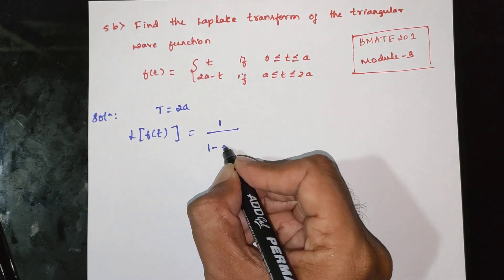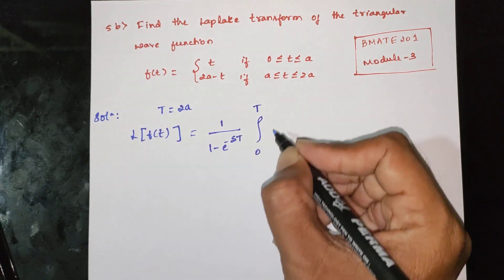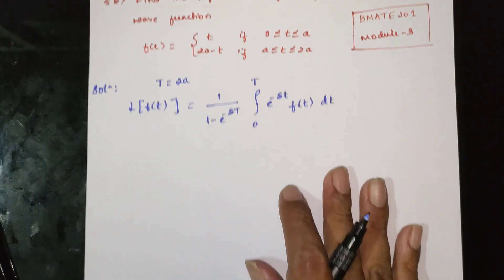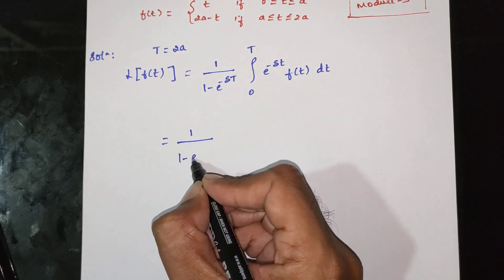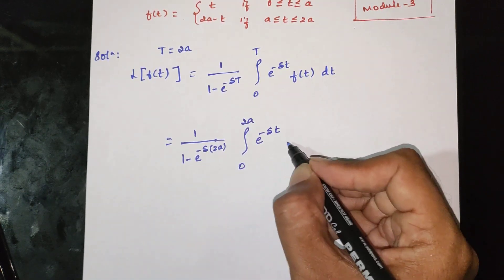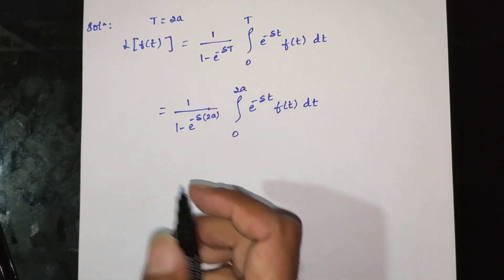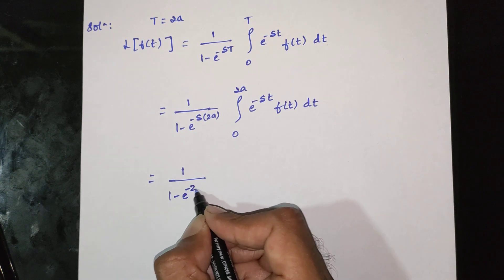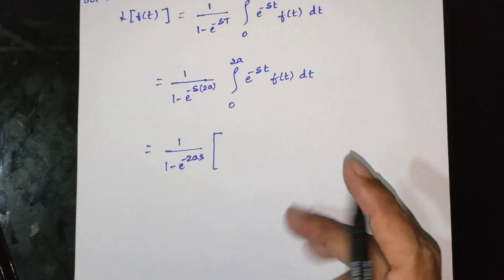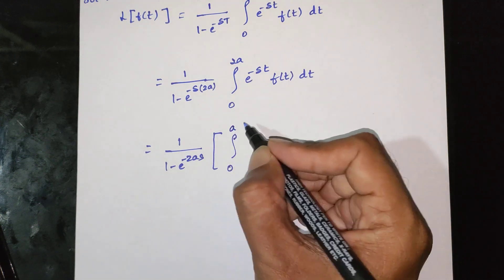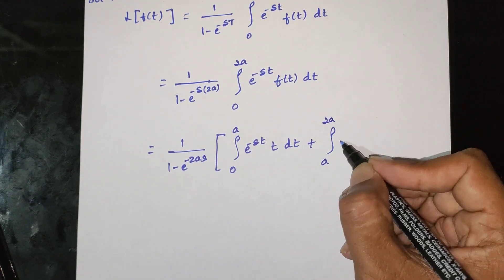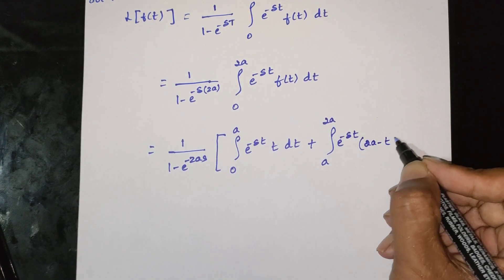The formula for the Laplace transform of a periodic function is: 1 by (1 minus e power minus sT), times the integral from 0 to T of e power minus st times f(t) dt. Here T equals 2a, so we get 1 by (1 minus e power minus 2as), times the integral from 0 to 2a of e power minus st f(t) dt. This splits into two parts: integral from 0 to a of e power minus st times t dt, plus integral from a to 2a of e power minus st times (2a minus t) dt.